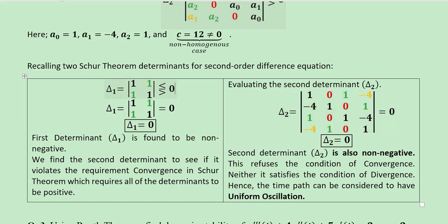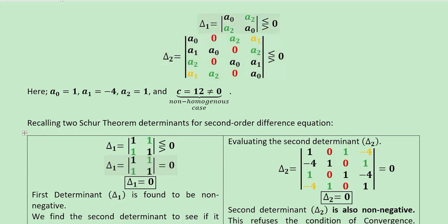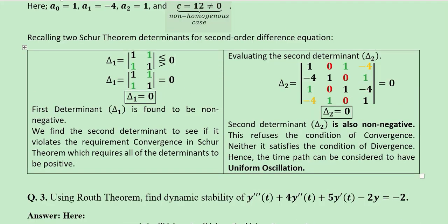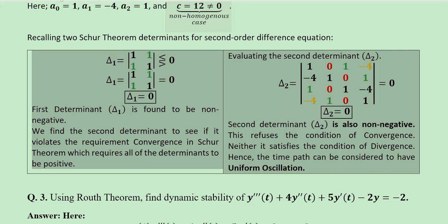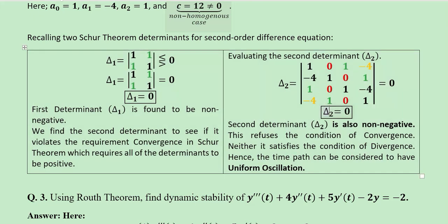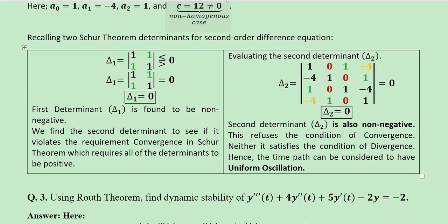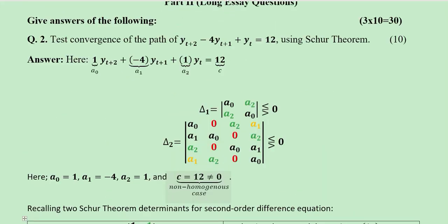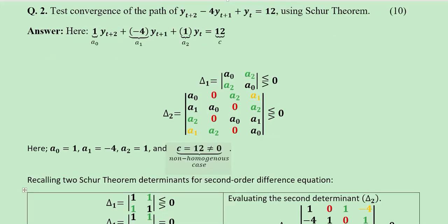Substituting the values of A0, A1, and A2, the first determinant Δ1 is equal to 0 — it is not negative, so we cannot conclude divergence. The second determinant is also equal to 0. Since neither a positive nor a negative value appears, it is neither convergence nor divergence — it is uniform oscillation. We have found the convergence behavior without finding the roots of the equation.